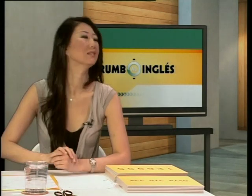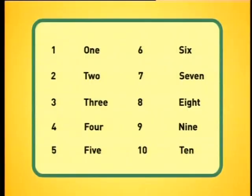Now your turn, Ruben. Let me hear you say one to ten very clearly with correct pronunciation. Begin. One. Two. Three... Are you saying árbol or tres? Tres. Tres — you want to say tres, not árbol. So listen: Three. Three. Yes. Three. Bien.